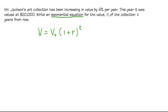So how can we use this? Well, this right here is just a value after T years, but then we have V₀, the initial value, and that's the $20,000.